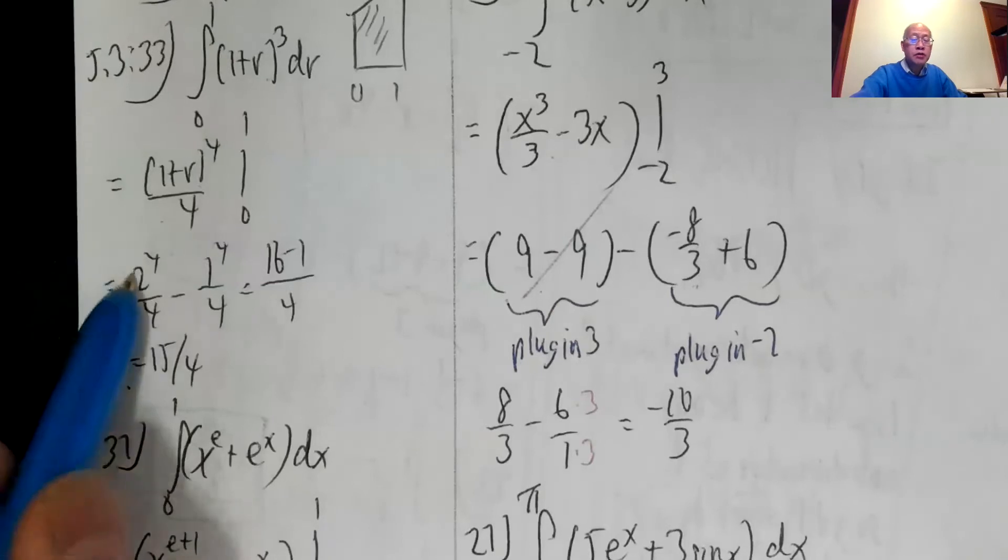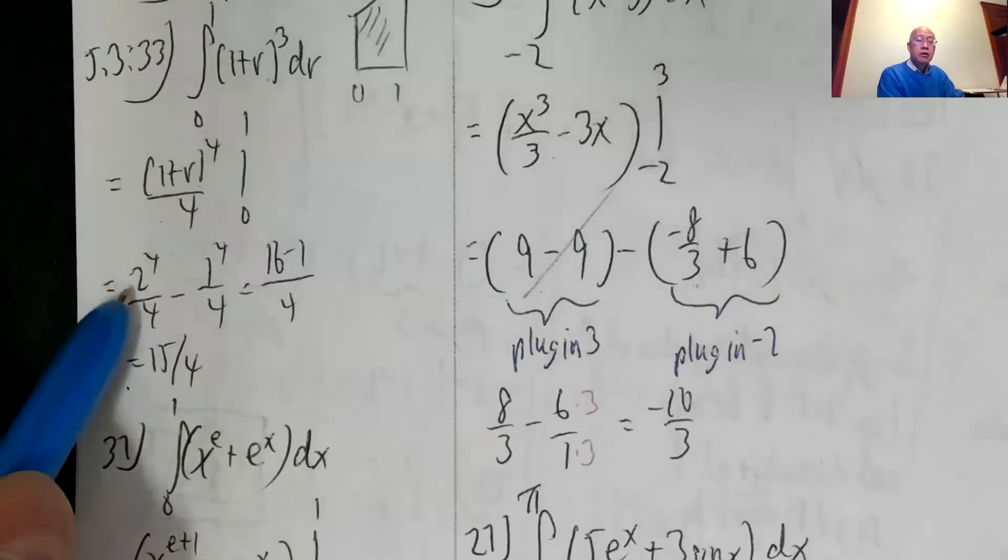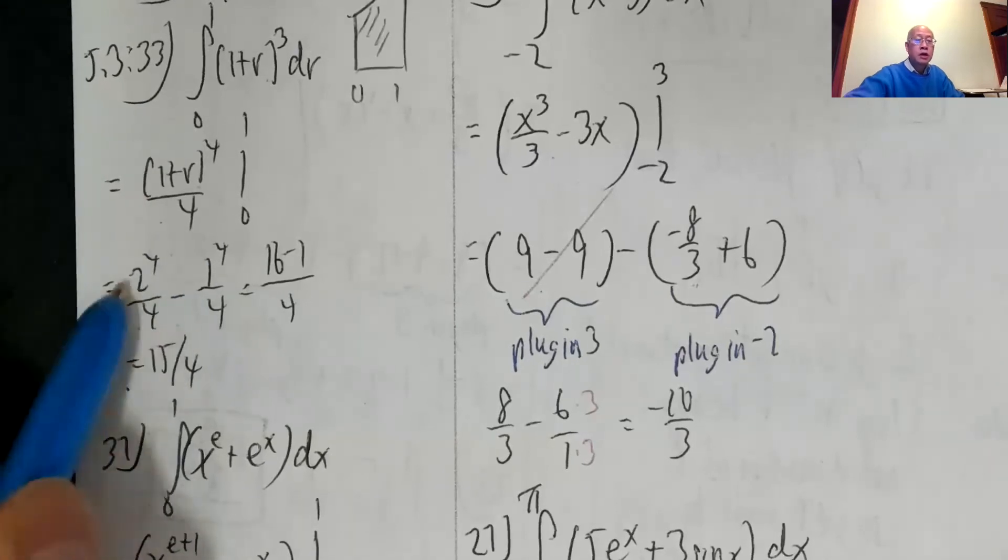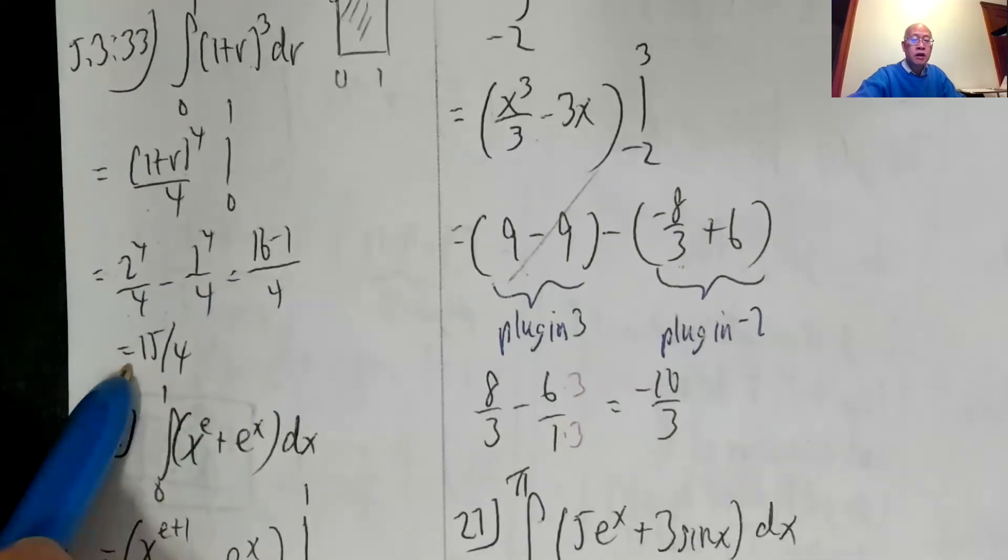So plug in one, I have two to the fourth over four. Plug in one, plug in zero, I have one to the fourth over four. So that's 16 minus one over four, 15 over four.